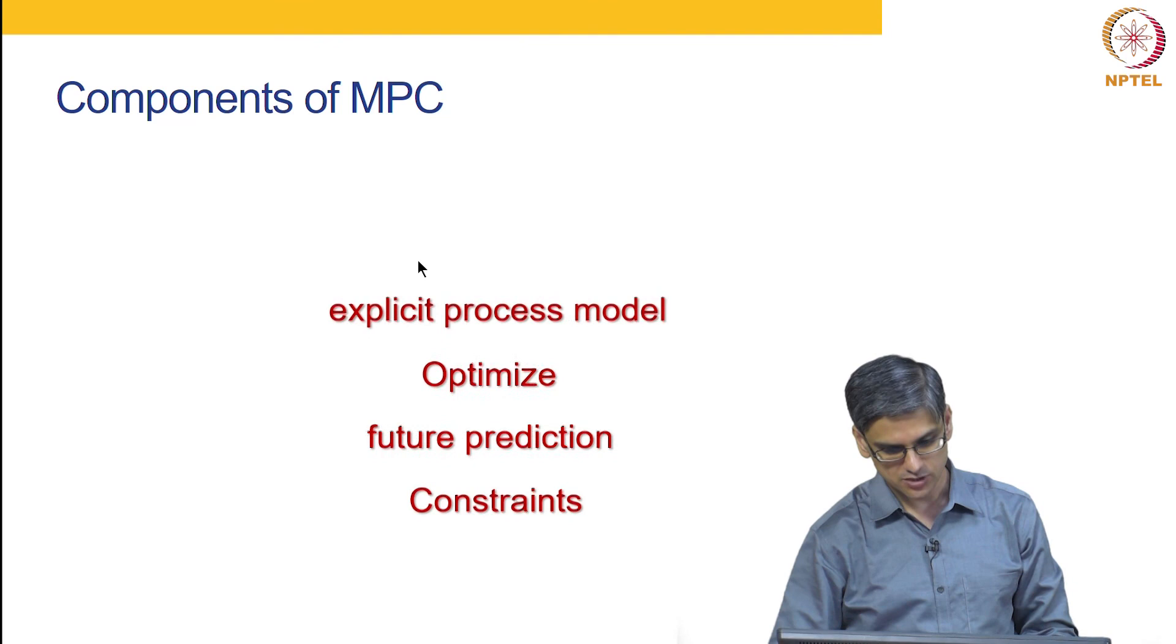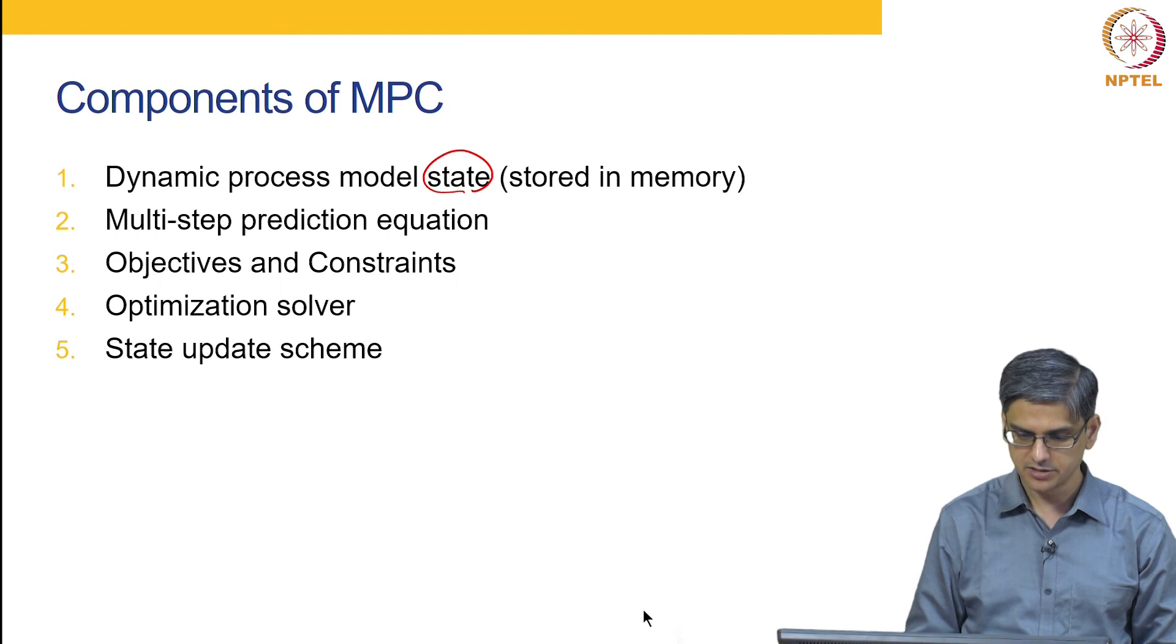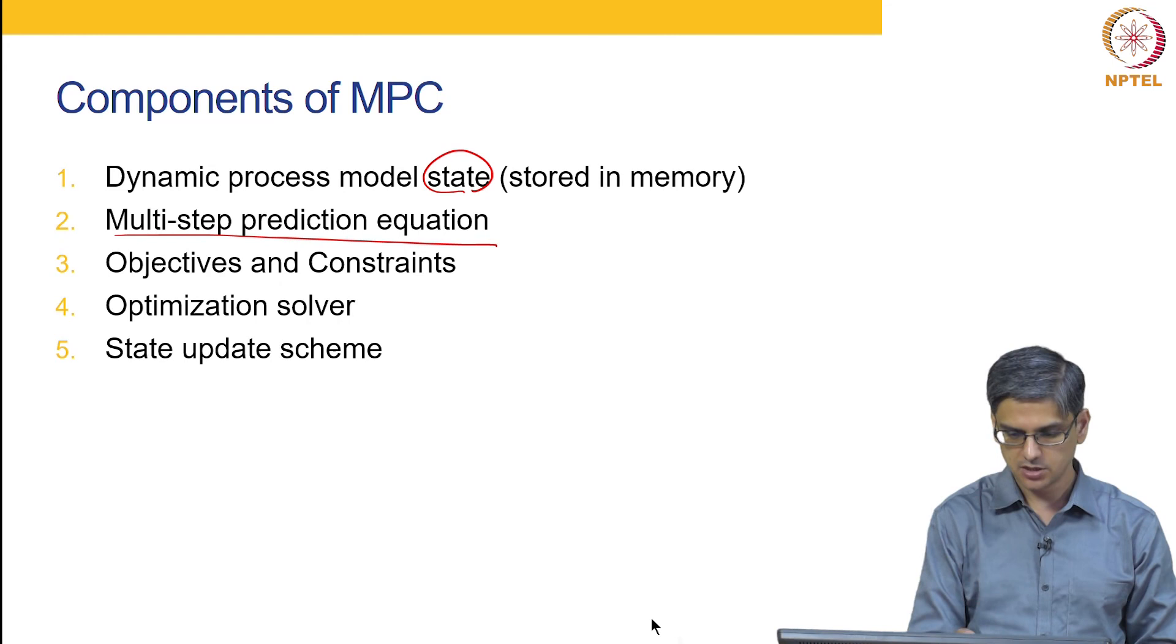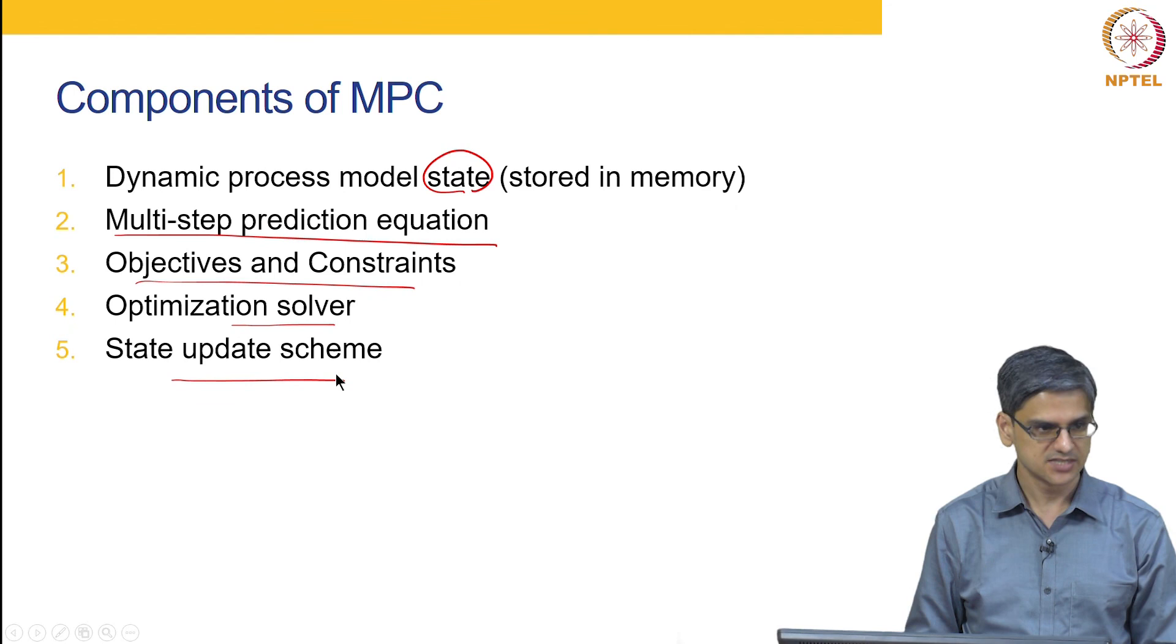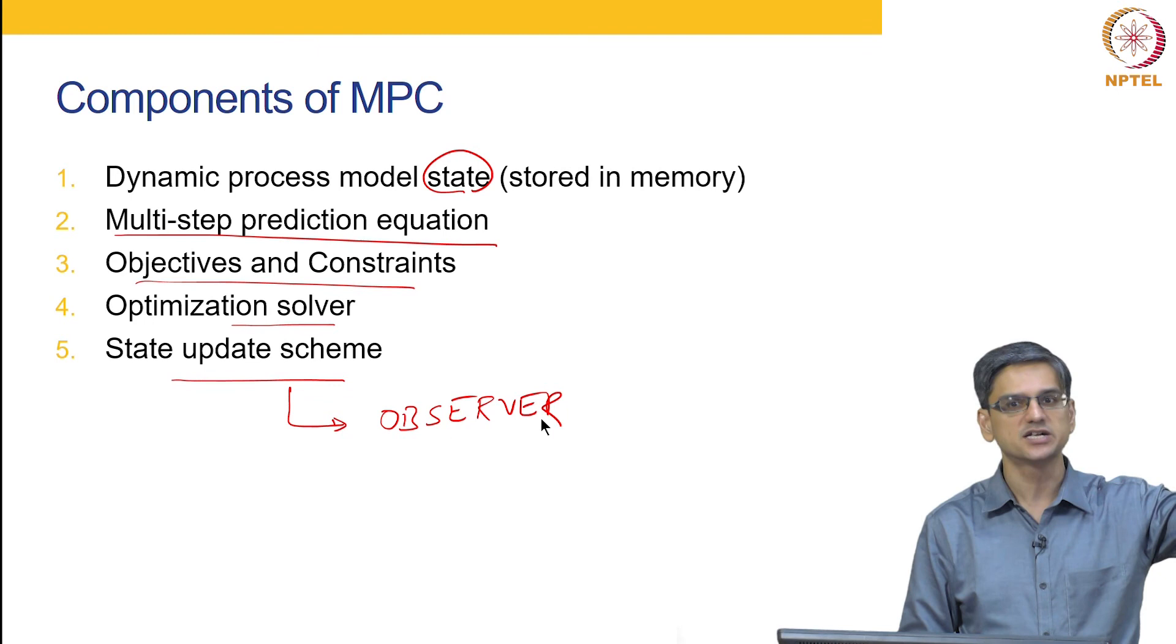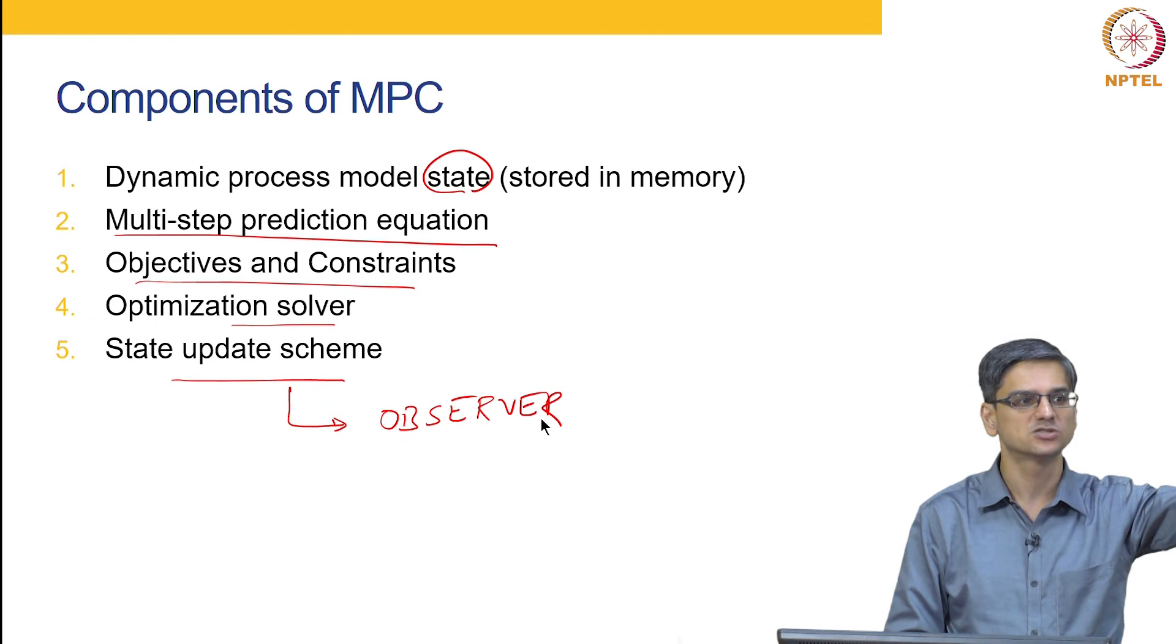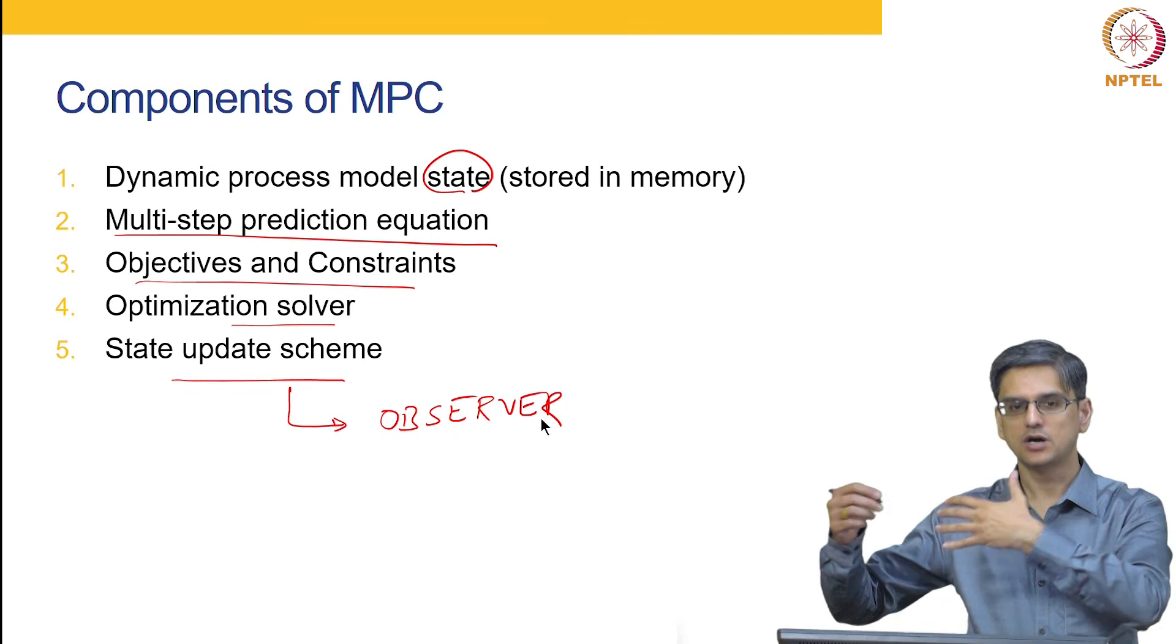So let us get back to the components of MPC and what that means is that you need a dynamic process model and along with the dynamic process model, you have the model state. You have the model in terms of a multi-step prediction optimization equation, objectives and constraints we saw about that earlier today. There is an optimization solver and there is a way to update the state. This is something that we have so far called observer which basically means you had predicted your system is going to reach at 12.5, but the system has only reached 12.4. So there is a difference of 0.1 in what you predicted and what actually happened. How can you use this information in order to update your model or update your state, that is what the questions are.